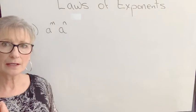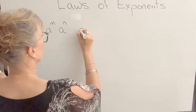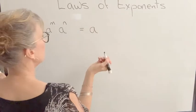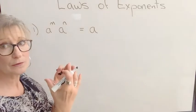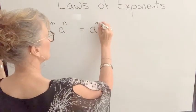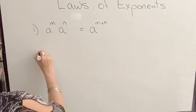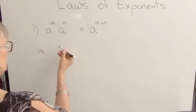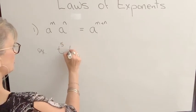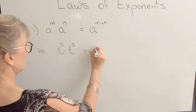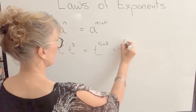So if I had A to the M times A to the N, because the bases are the same, I'm allowed to combine those, and then you simply add the exponents. Let's look at an example. So, I'll use variables, let's say I had T to the 5th times T cubed. That would be T to the 5 plus 3, which is T to the 8th.